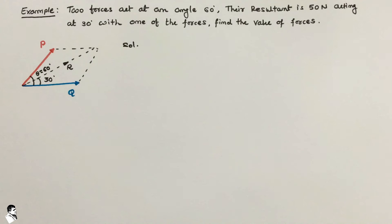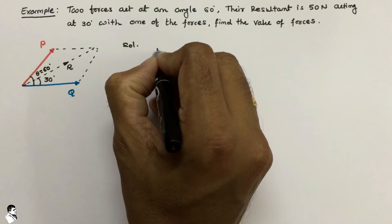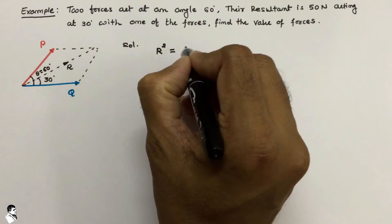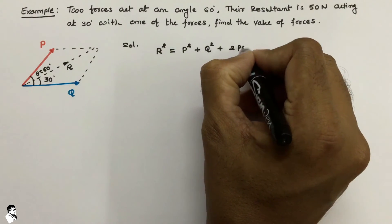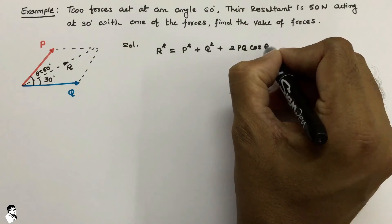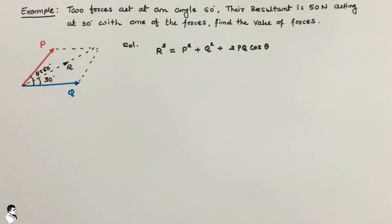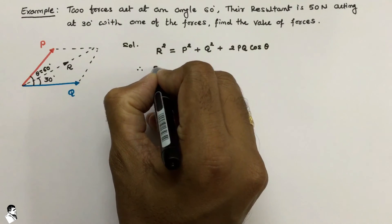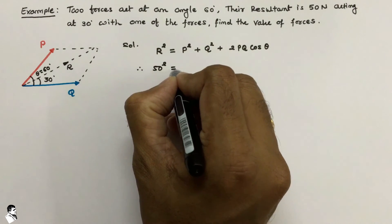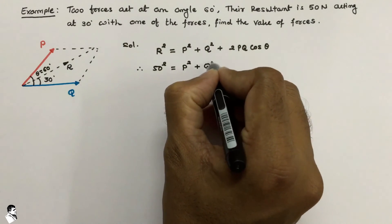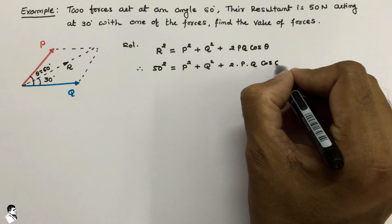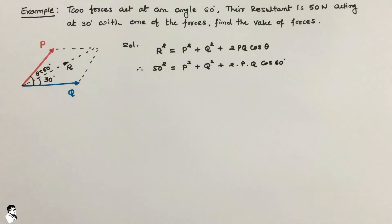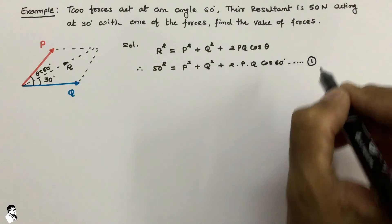In the solution, according to the law of parallelogram of forces, we write the equation of the resultant: R squared is equal to P squared plus Q squared plus 2PQ cos theta. Putting in the given values, 50 squared is equal to P squared plus Q squared plus 2 into PQ into cos 60 degrees. We take this as equation number 1.